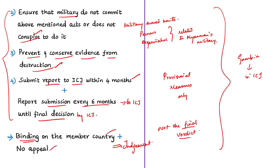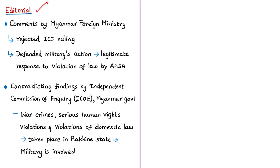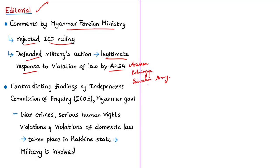In this editorial, the author mentions Myanmar's foreign ministry comments on the ICJ ruling. The foreign minister rejected the ruling and accused rights groups of presenting a distorted picture of the situation to the ICJ. Myanmar defended the military's actions as a legitimate response to violations of law by the insurgent Arakan Rohingya Salvation Army (ARSA) — a militant group that had attacked police and army posts — which the Myanmar government declared a terrorist organization.